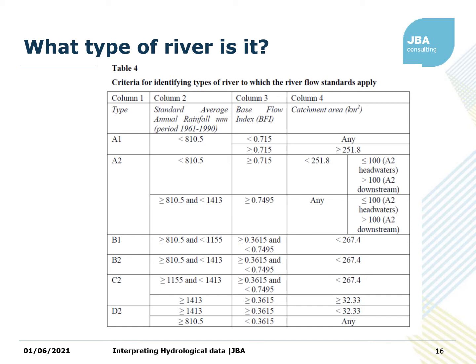The next couple of slides are taken from the Northern Ireland legislation adopting the Water Framework Directive into law. They show a typical way of deciding what your environmental flow should look like. You go out, look at the river, decide which category it's currently in, and then determine whether it needs improvement or whether you need to maintain the flow. These lookup methods are how this is usually assessed. In the first table, you work out what kind of river it is — the first column shows different classes from A1 down to D2, then depending on rainfall, base flow index and catchment area.